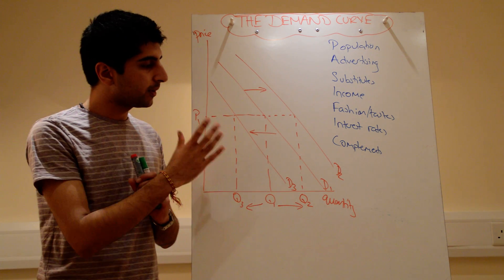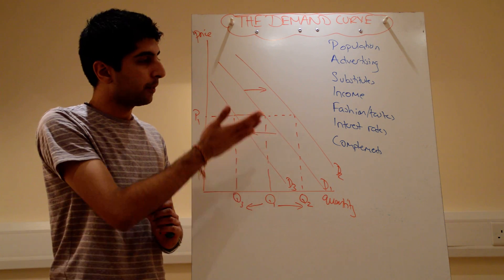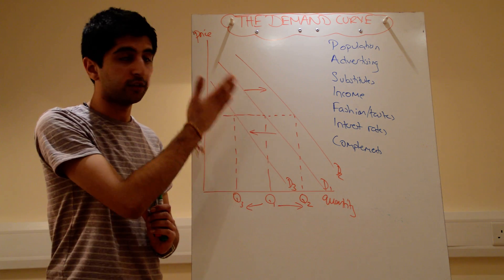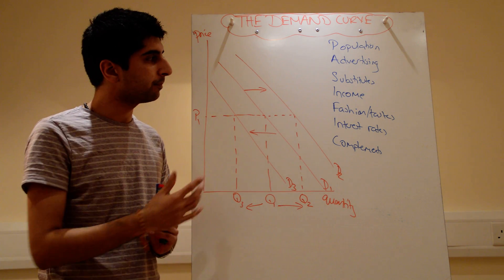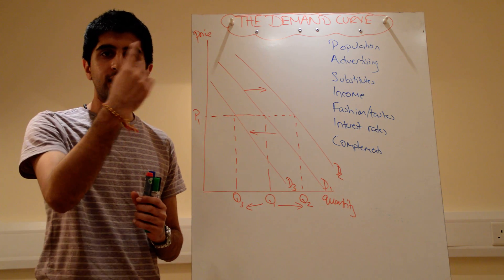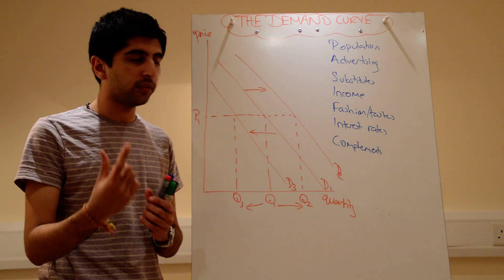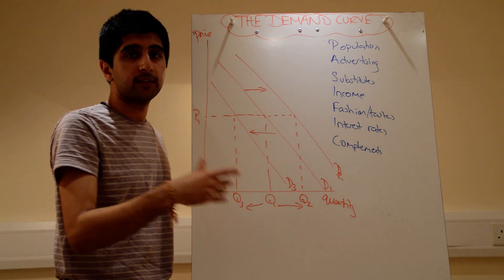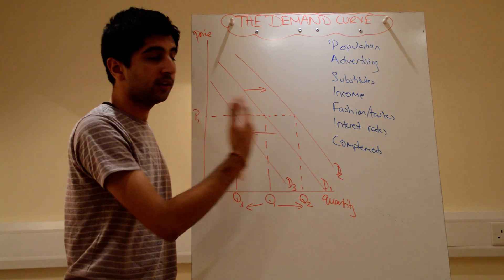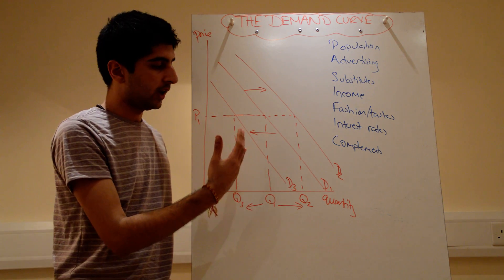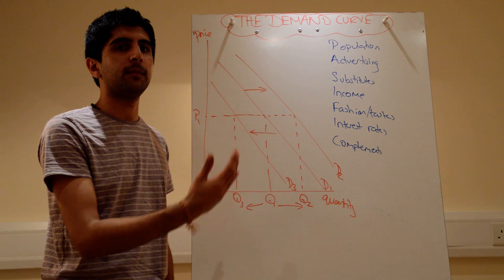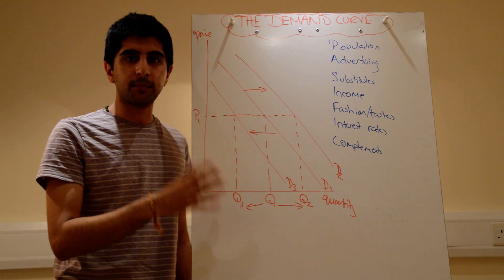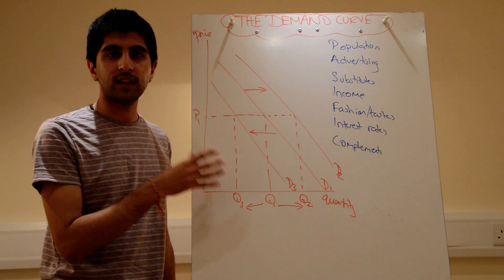So we've looked at the demand curve and why it slopes downward. Price changes demonstrate the law of demand — a price change will extend or contract demand along the curve. And we now know the non-price factors that, by dropping the assumption of Ceteris Paribus, shift the curve and increase or decrease quantity at the same price. This is all the key stuff behind demand — make sure you understand this very clearly.